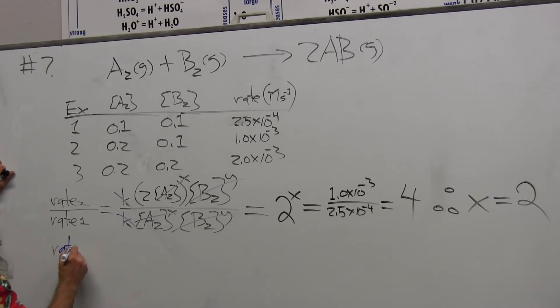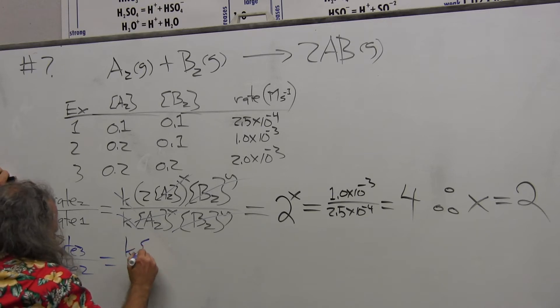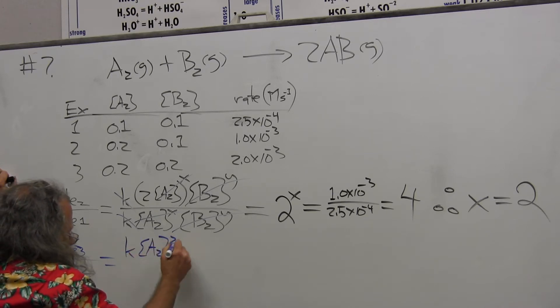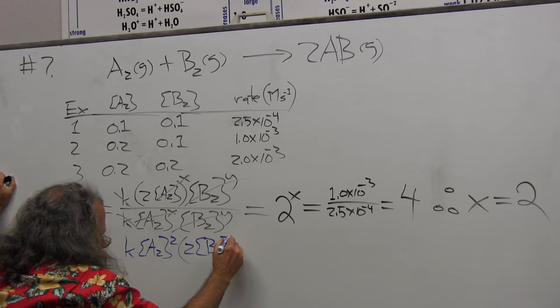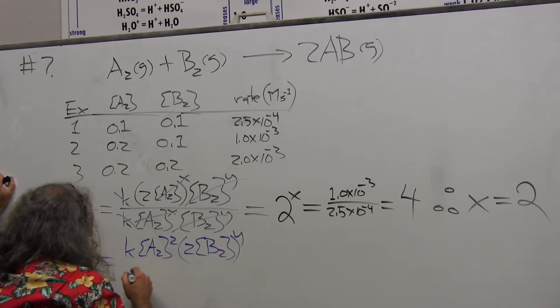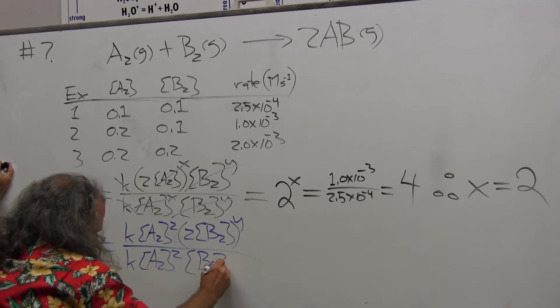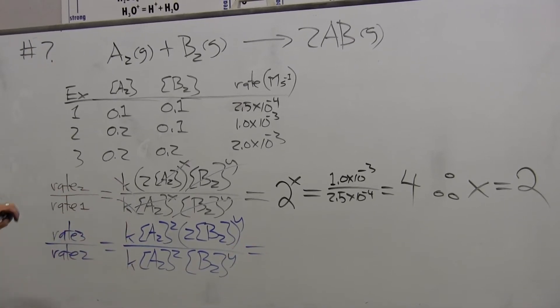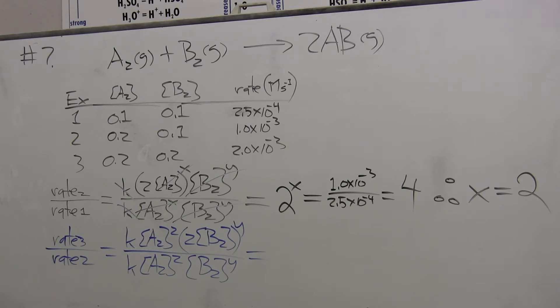Rate 3 over rate 2 is equal, again we write out the same expression. At this point I can take the information here and include it and put the 2 in front of the [B2] to the Y over K times [A2] to the X times [B2] to the Y. Is there a mistake in the key? You heard me? I was reading ahead. Yeah, that was a typo. I make mistakes like that. Please point it out.